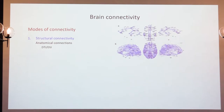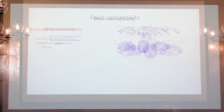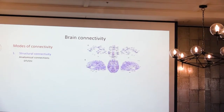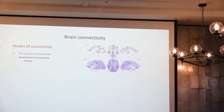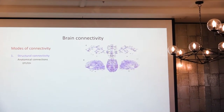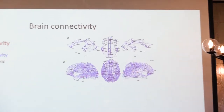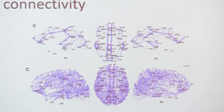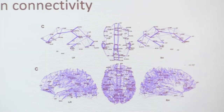One way is to look at structural connectivity, which is basically just the roads that are in your brain. You can look at the highways if you use a higher threshold — these are the highways we have in our brain — or you can look at almost all structural connections that you have.